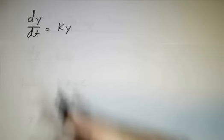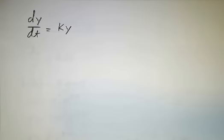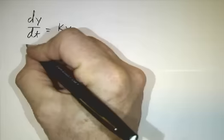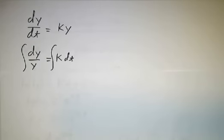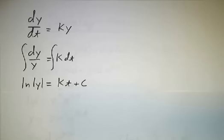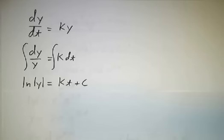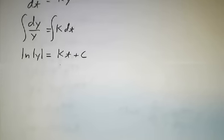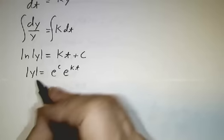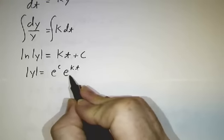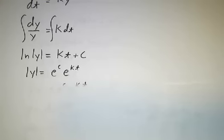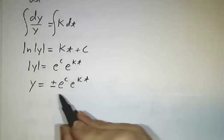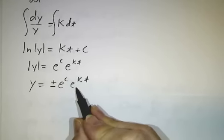So it's separable. We divide both sides by y and multiply by dt, and then we integrate both sides. Well, that tells us the natural log of y is kt plus a constant. We don't want the natural log of y, we want y. So we exponentiate that. We get that the absolute value of y is e to the constant times e to the kt. So y is plus or minus e to the constant times e to the kt.